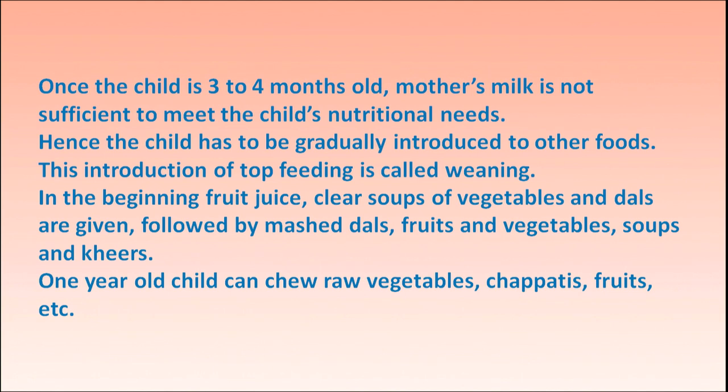Weaning begins with fruit juice, clear vegetable soups, dal, and is followed by mashed dal, fruits, and vegetables. As the family prepares soups, khichdi, paste, custard, etc., these are introduced gradually. By the age of one year, the child can chew — as teeth are also developing — and can eat raw vegetables, chapati, and fruits.